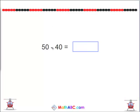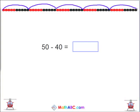50 minus 40 equals what? If you have 50 beads, let's count by 10s to get to 50. 10, 20, 30, 40, 50 — and you get rid of 40 of them.